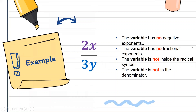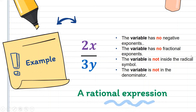Next: 2x all over 3y. Checking the conditions: no negative exponent — condition 1 met; no fractional exponent — condition 2 met; no radical symbol — condition 3 met; the variable is not in the denominator — condition 4 met. All conditions have been met. Therefore, 2x all over 3y is a rational expression.